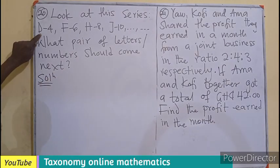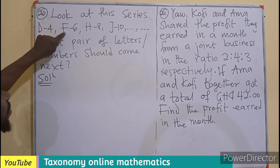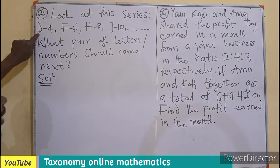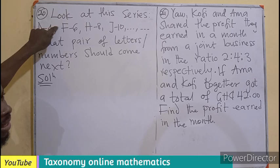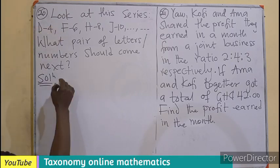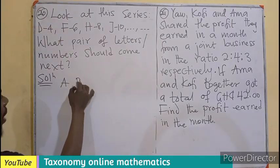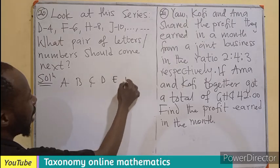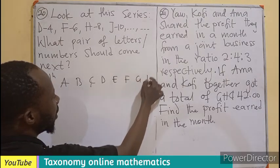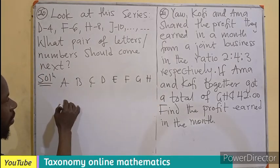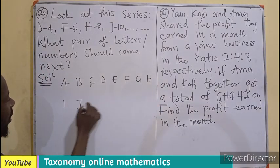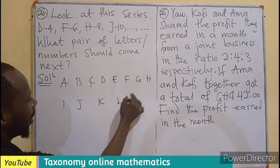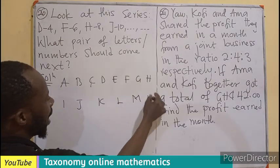If we check carefully, you can see that after D comes F — E is missing in between. Looking at the alphabet: A, B, C, D, E, F, G, H, I, J — every alternate letter is being used, meaning one letter is skipped each time.